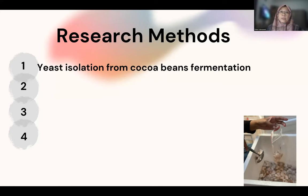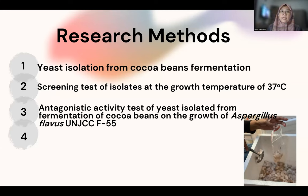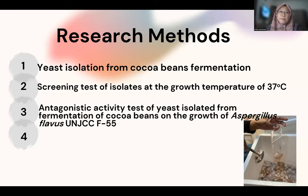The research methods are: first, yeast isolation from cocoa bean fermentation. Then we perform the screening of yeast isolates, and we assess the antagonistic activity of yeast isolated from fermentation cocoa beans against our culture collection of Aspergillus flavus UMG, Universitas Negeri Jakarta, culture collection F55. We also perform morphological observation of yeast isolates.